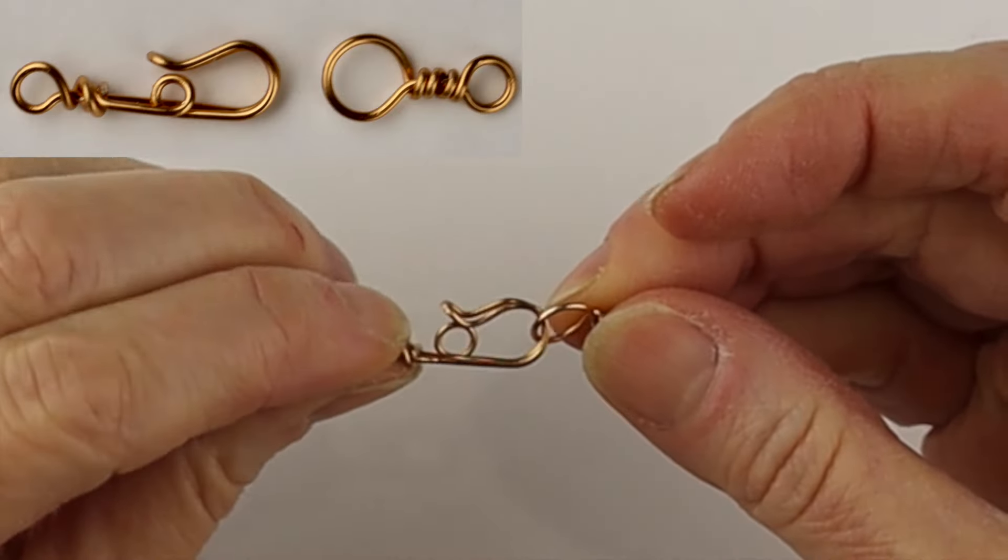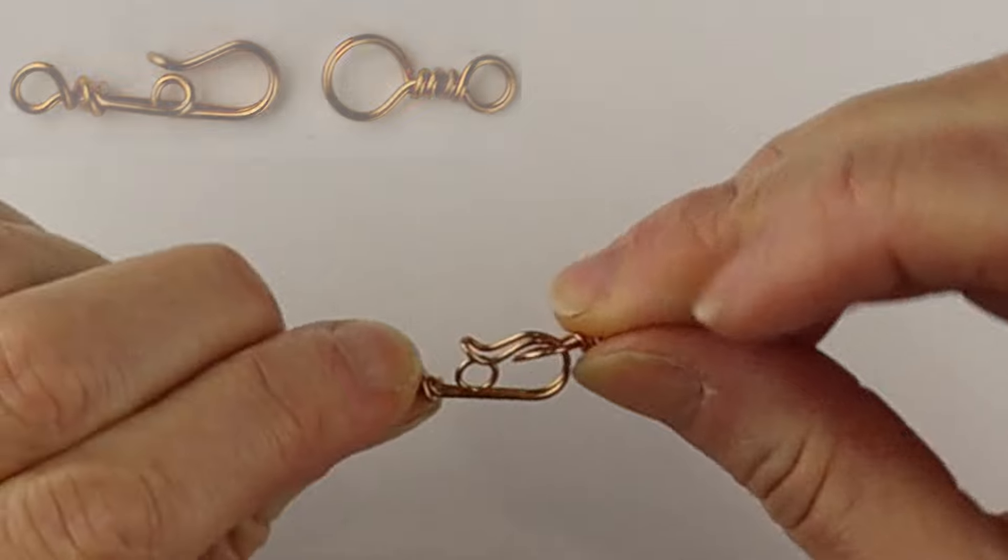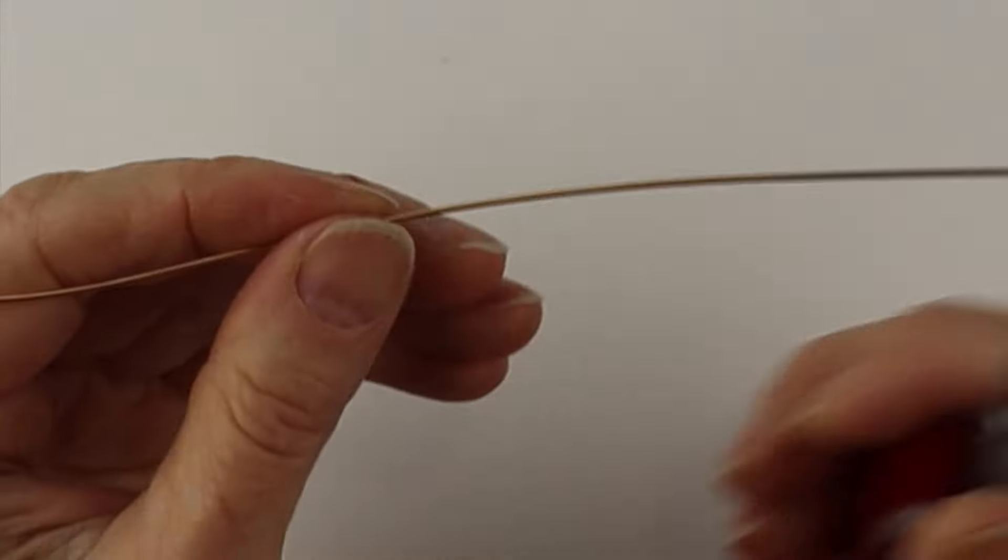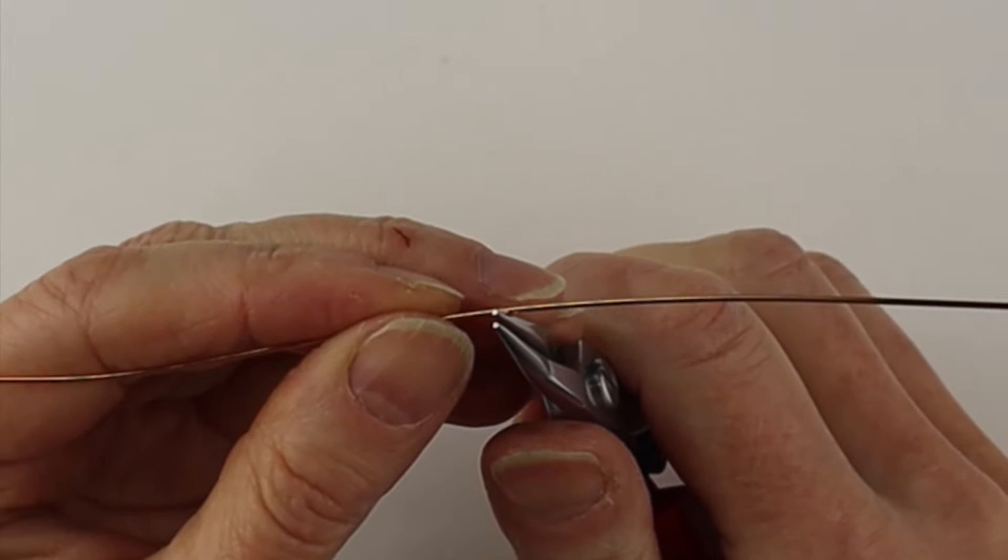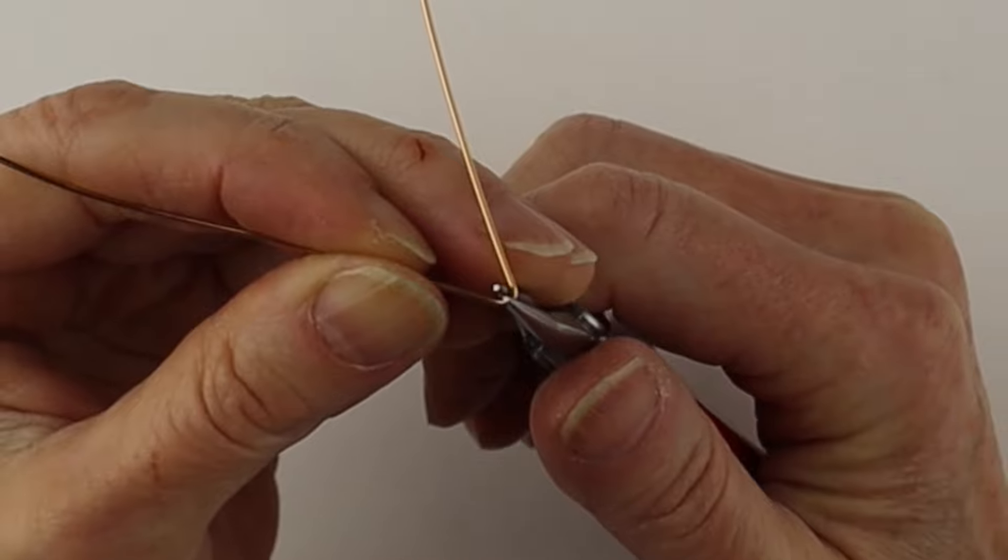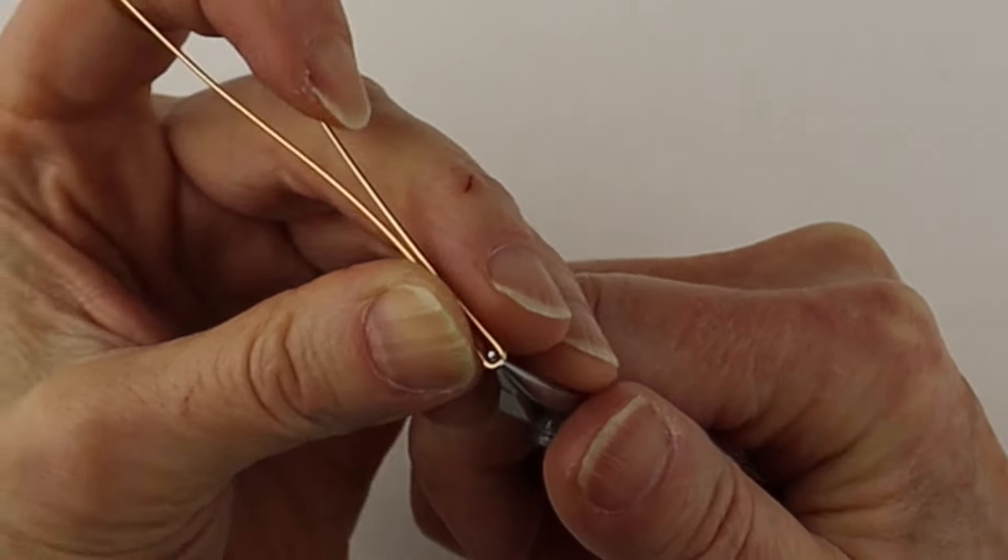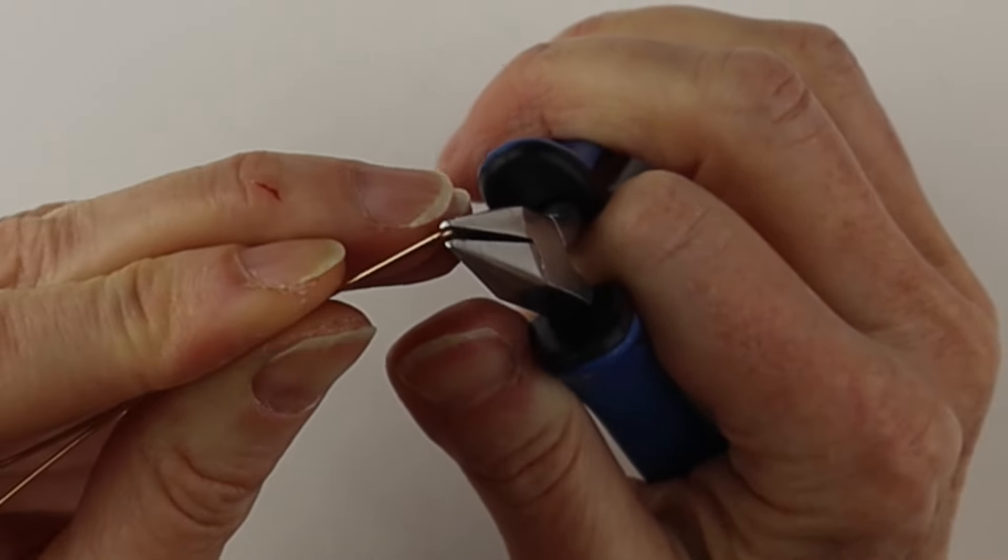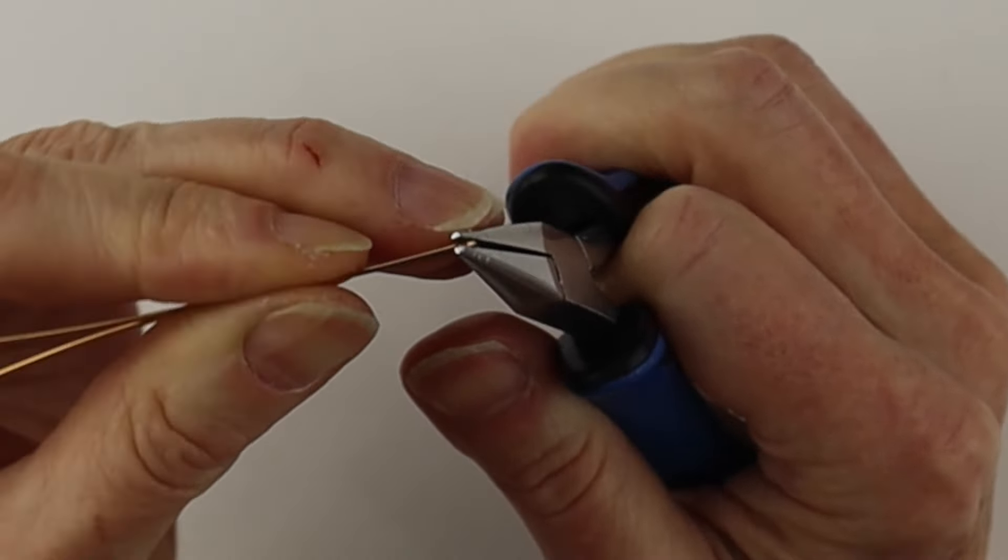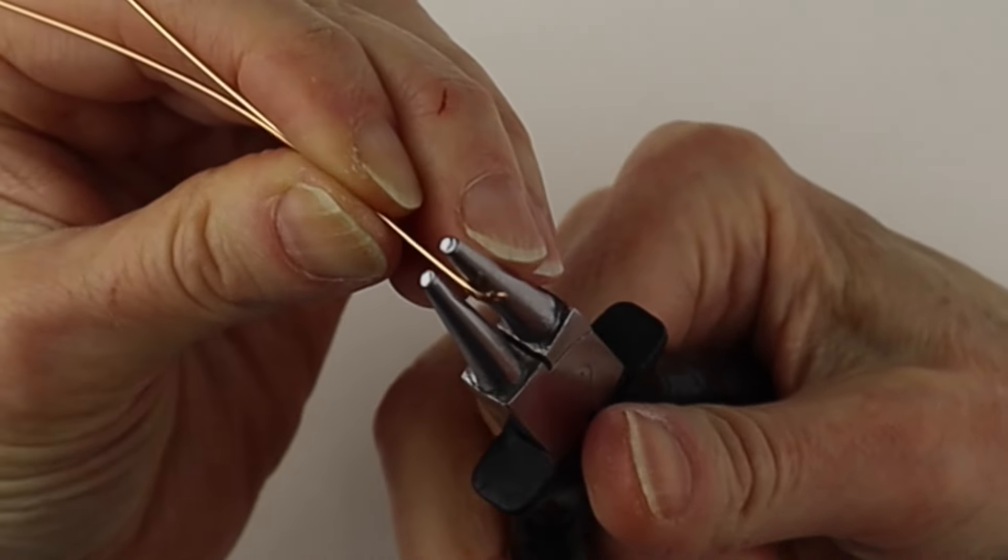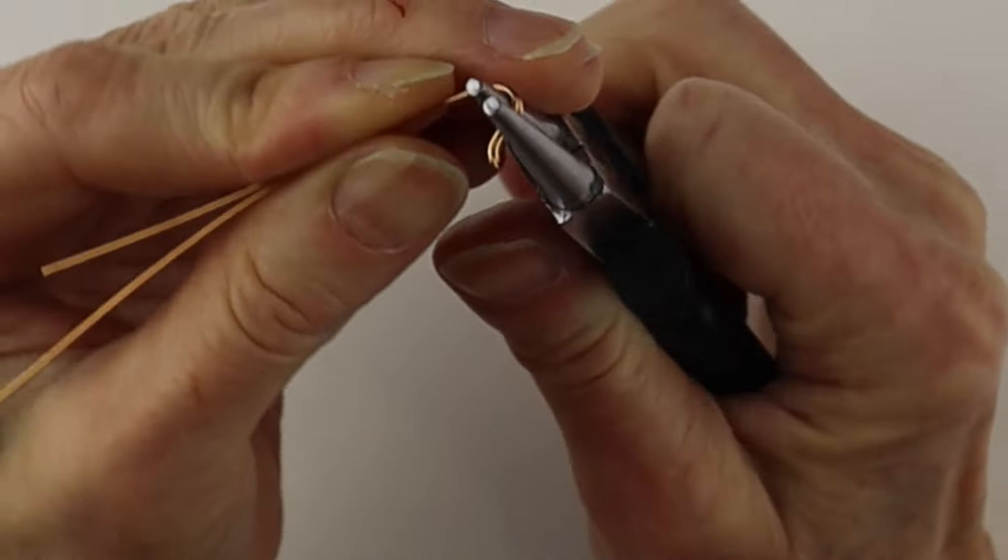The second one is done slightly differently. We've done a loop there to prevent the one side of the clasp from coming out. We'll start it in the same way we did the first one, two to three inches from the end. We're just going to bend this one around to make a loop again. We'll get the flat pliers and bend it out on a bit of an angle, and then the larger round pliers to bring that around.